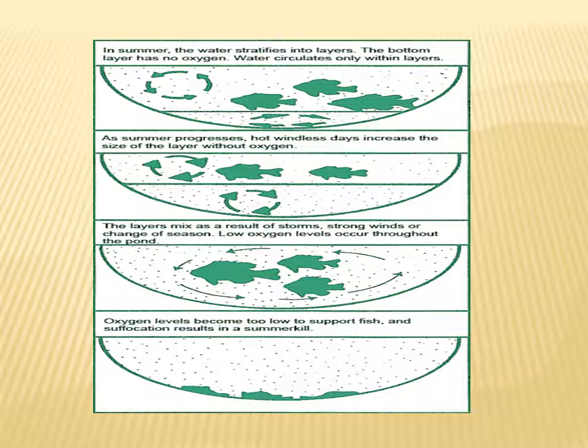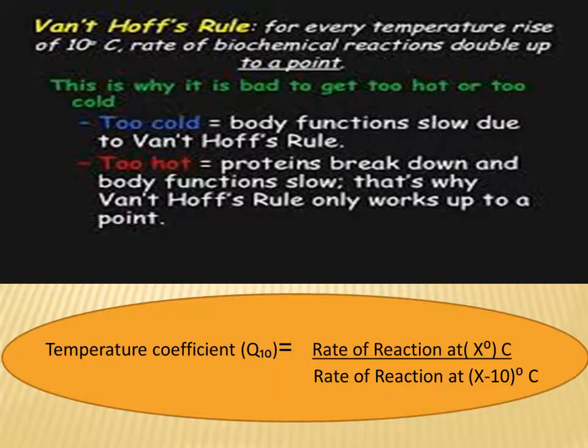Temperature also affects enzymatic reactions in organisms, and this was clearly explained by the scientist Van't Hoff. Van't Hoff suggests that for every 10 degree centigrade rise in temperature, the rate of reaction is doubled. This is given by the formula: temperature coefficient Q10 equals rate of reaction at x degree centigrade divided by rate of reaction at x minus 10 degree centigrade. The value will always be 2, meaning the rate of reaction is doubled for every 10 degree rise in temperature, where x plus 10 is the increased temperature and x minus 10 is the initial temperature.